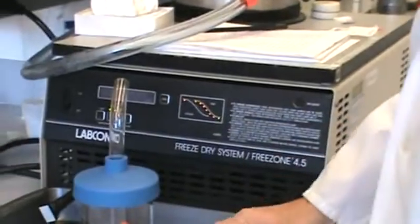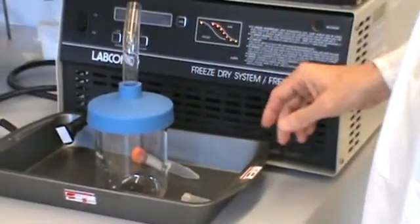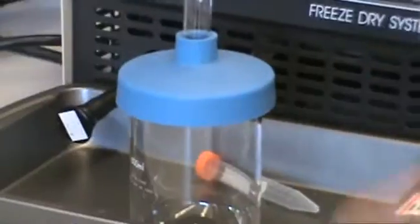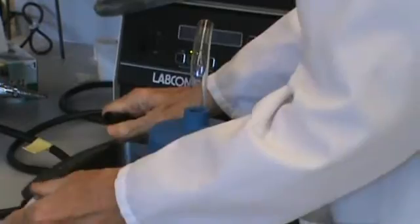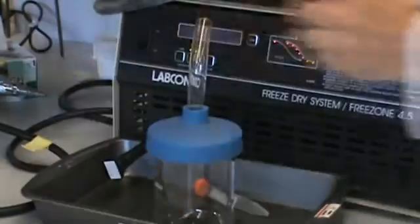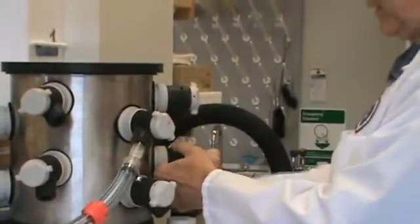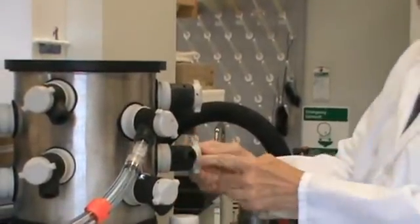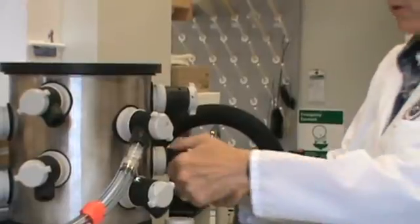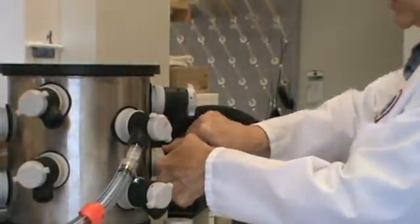First thing is to seal the vacuum, as we leave it open for storage. We leave the plug open, the drain plug open, so you seal that. Find the port that's been left open, usually one port's left open. The slant here is toward open, so you close that.